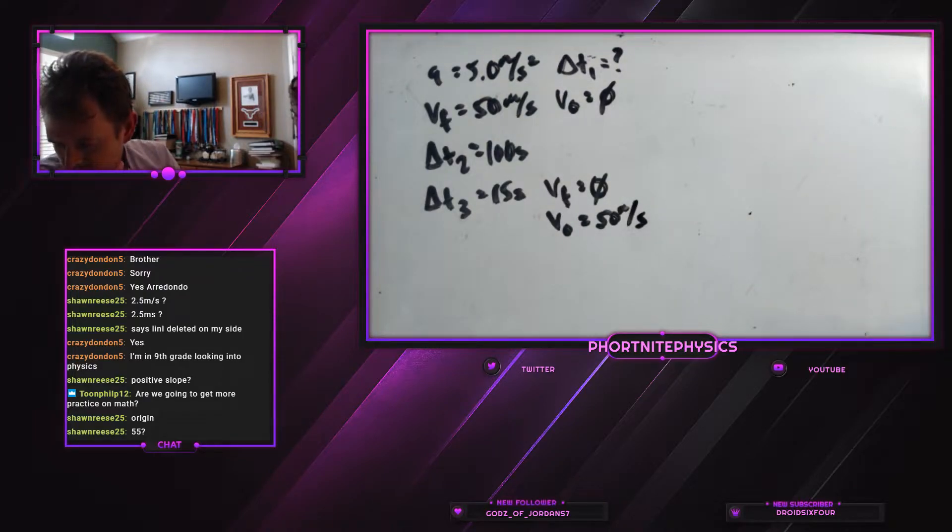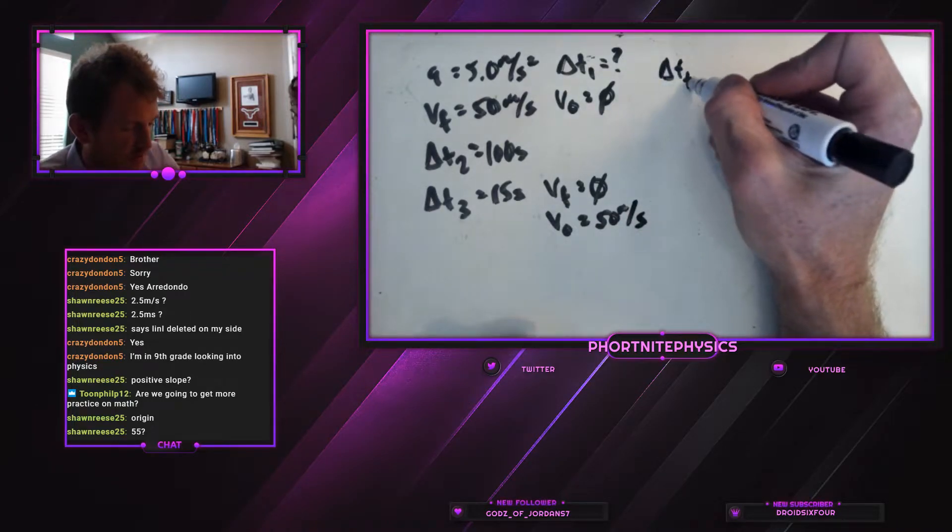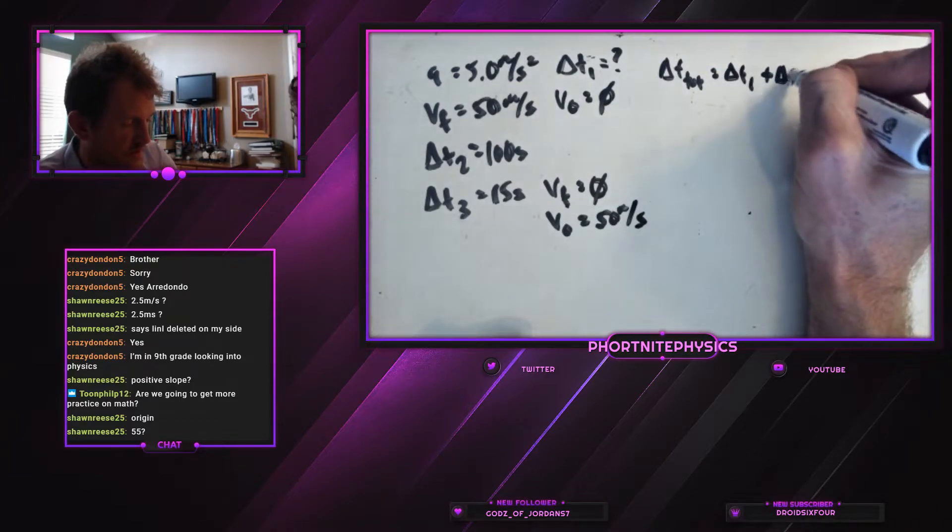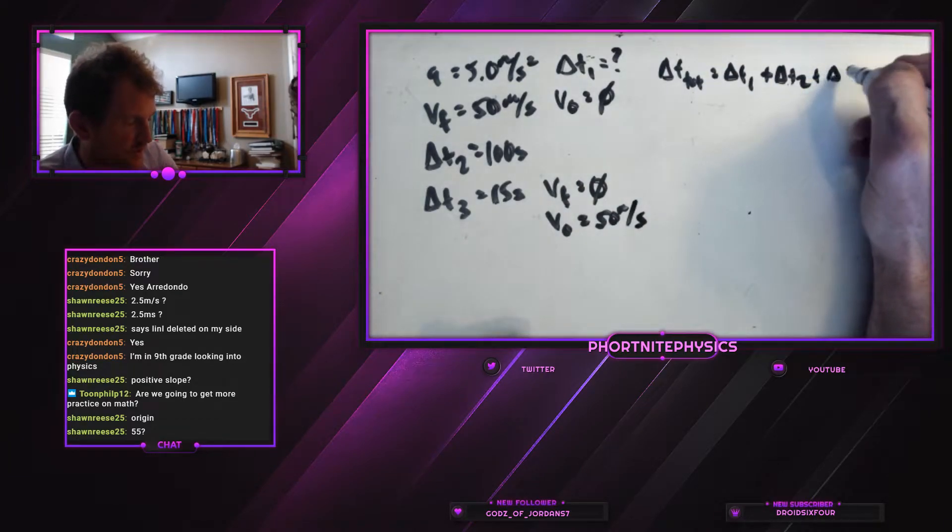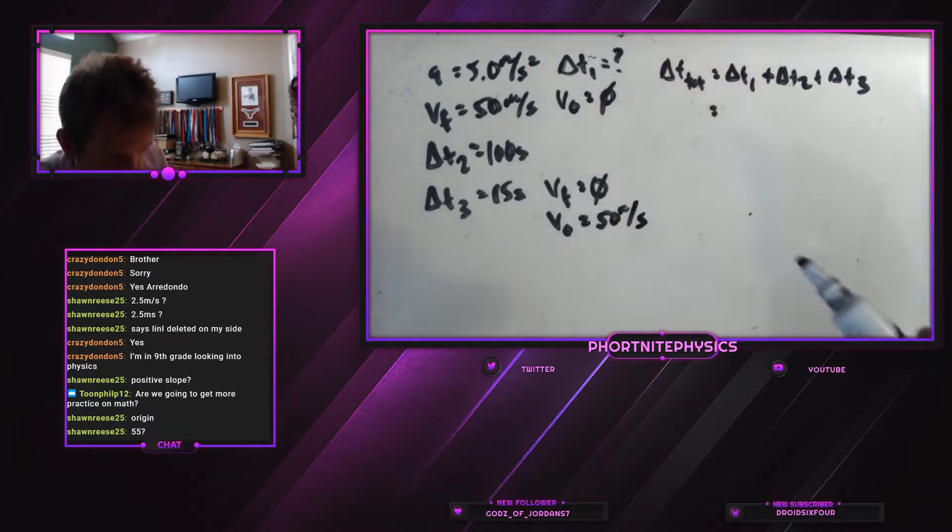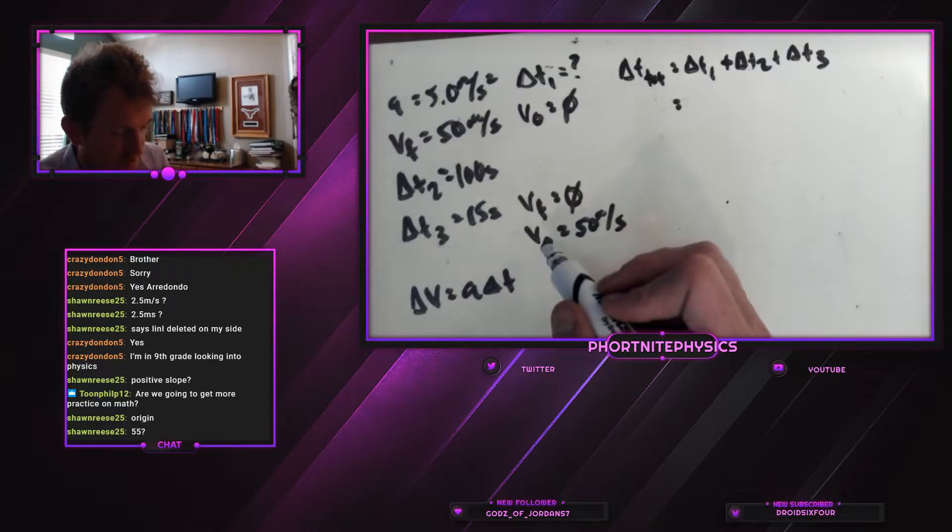So how long is the truck in motion and what is the total displacement of the truck? The only time we don't know is this one right up here. Because if we're calculating our total time it's going to be t1 plus delta t2 plus delta t3. We need to find out this delta time to start with. And the easiest way is going to be our delta v equals a delta t.